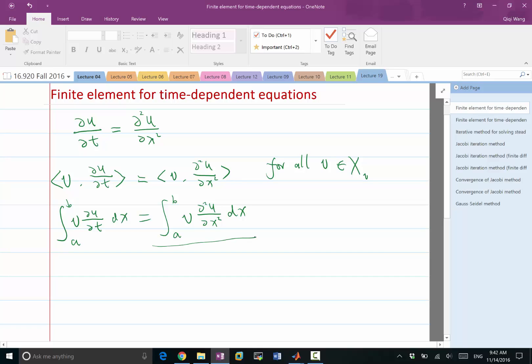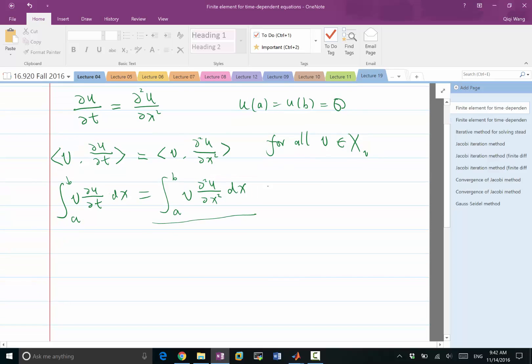And if we want to use the same technique we used to deal with Poisson's equation on the right-hand side of this equation, what should we do? Integrate by parts, right? So here we need some boundary conditions. Let's assume we have a simple boundary condition, u(a) equals u(b) equals 0. Then through integration by parts, we know that this v also has to satisfy the same boundary condition. So with integration by parts,